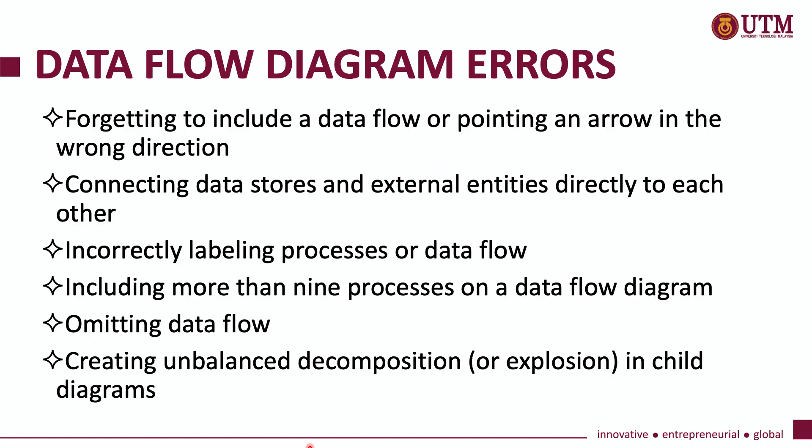In creating a data flow diagram, we might encounter or create some errors. Among the errors most commonly made by system analysts or students is forgetting to include a data flow or pointing an arrow in the wrong direction. We might also directly connect a data store and external entities to one another, incorrectly label processes or data flows, include more than 9 processes on a diagram, omit a data flow, or create unbalanced decomposition in a child diagram.